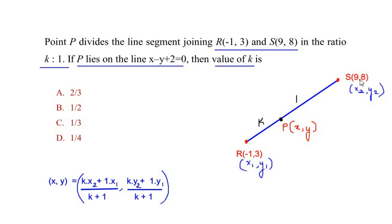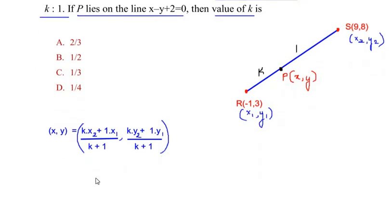Now let us substitute the values of x₂ and x₁ as well as y₂ and y₁. We get it as k times 9, so 9k, plus 1 times -1, which is -1, divided by k+1. For the y-coordinate: k times 8 gives 8k plus 1 times 3 divided by k+1.